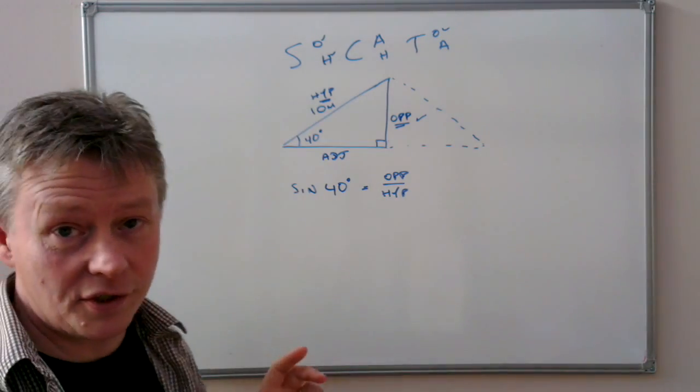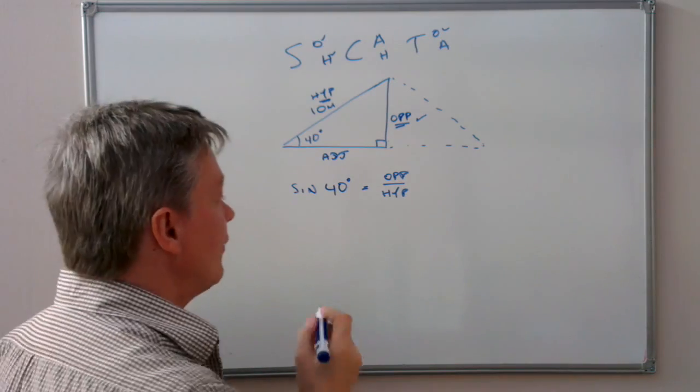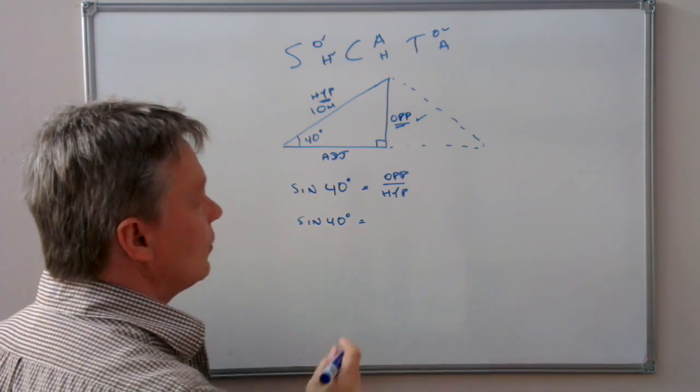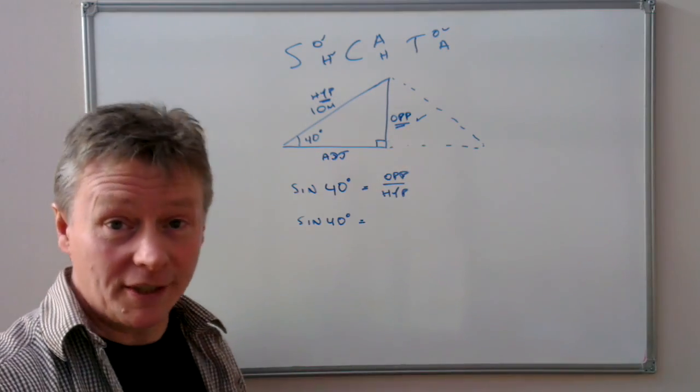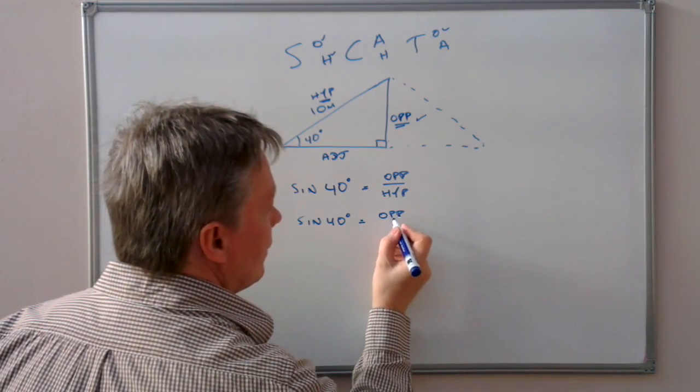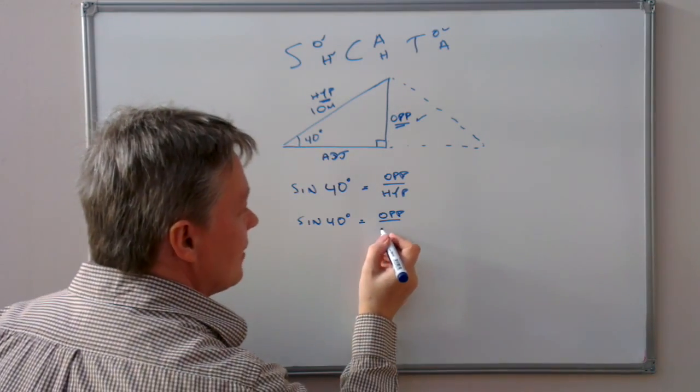So if I now put in some numbers, I've got sine 40 degrees equals opposite, which I don't know—it's the bit I'm trying to find—divided by the hypotenuse, which is 10, 10 meters.